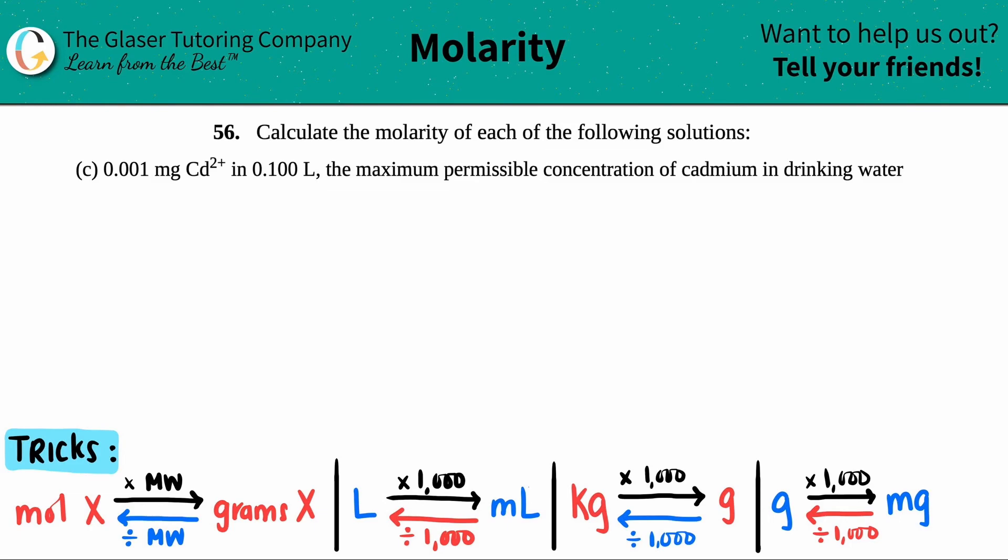Number 56, calculate the molarity of each of the following solutions, and then we have letter C. In this case, they give us 0.001 milligram of cadmium ion 2 plus, and this is all in 0.100 liter. And this is the maximum permissible concentration of cadmium in drinking water. Interesting. Let's just find the molarity, shall we?